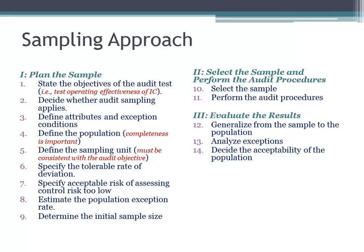If your audit objective is to test cash disbursements and that cash disbursements are valid, your sampling unit is going to be from your cash disbursement journal, and you're going to look at the documentation to support that disbursements were only recorded after this three-way match occurred.